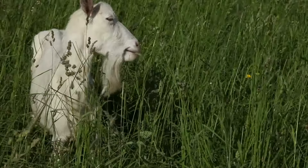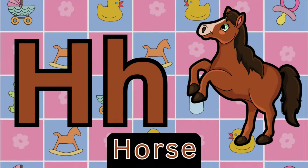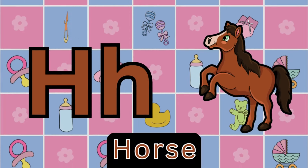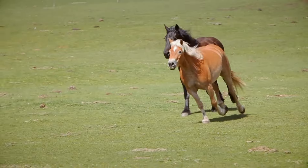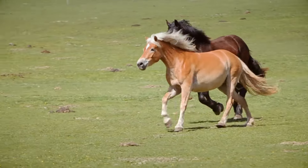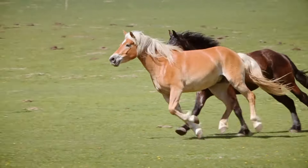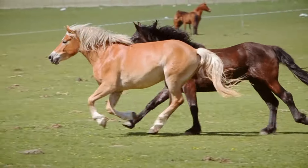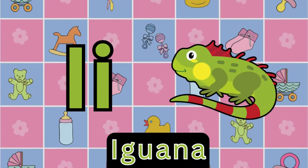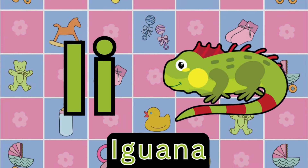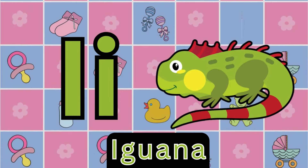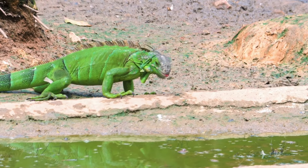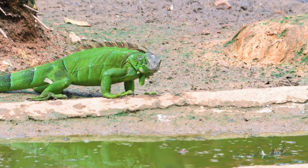A is for alligator. A, a, alligator. A, a, alligator. A, alligator. B is for bear. B, b, bear. B, b, bear. B, bear.